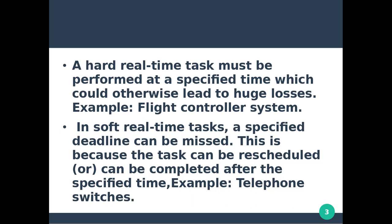For example, a soft real-time task is given 10 seconds to complete. If it is done in 15 seconds instead of 10, it will have a 5-second remainder — but it still completes. That is the difference between soft real-time and hard real-time tasks. An example of a soft real-time system is telephone switches.